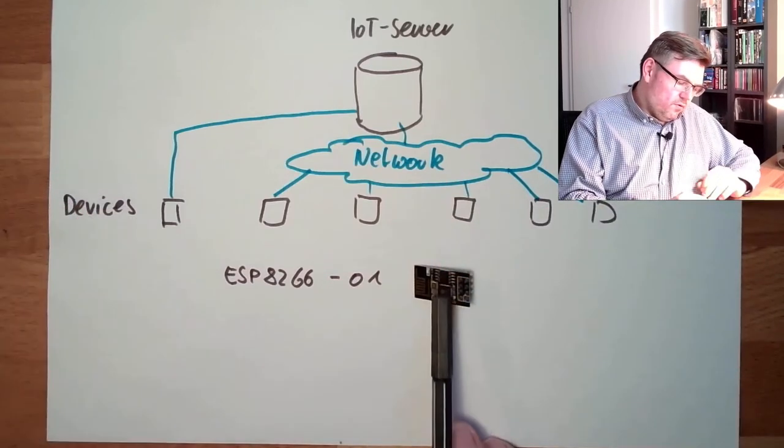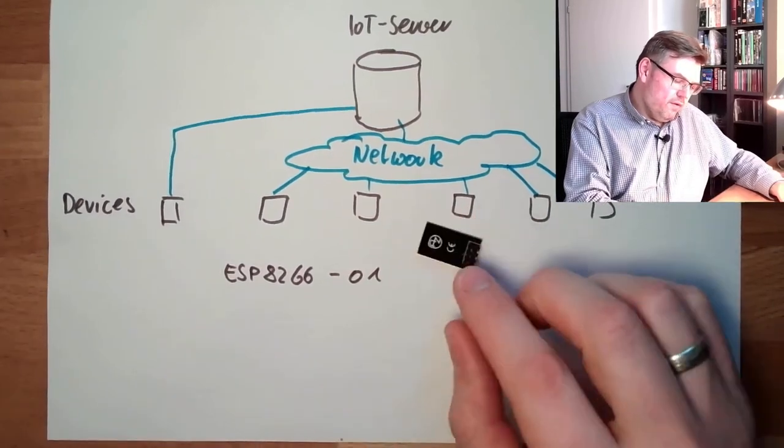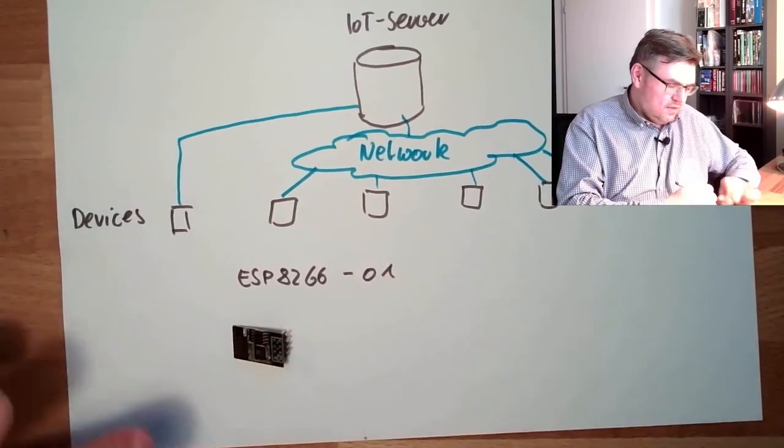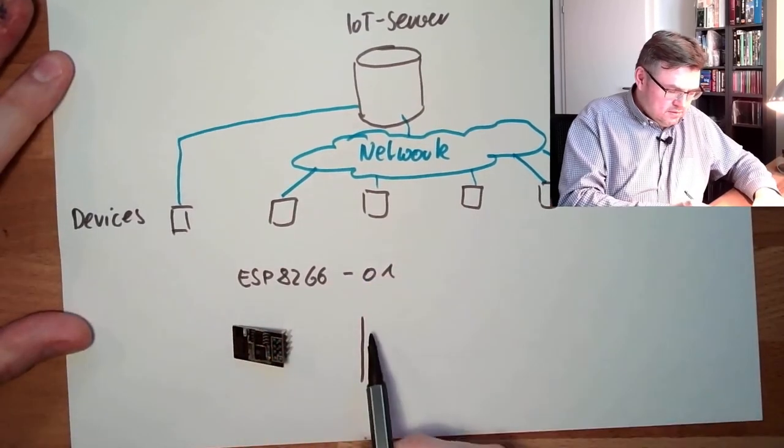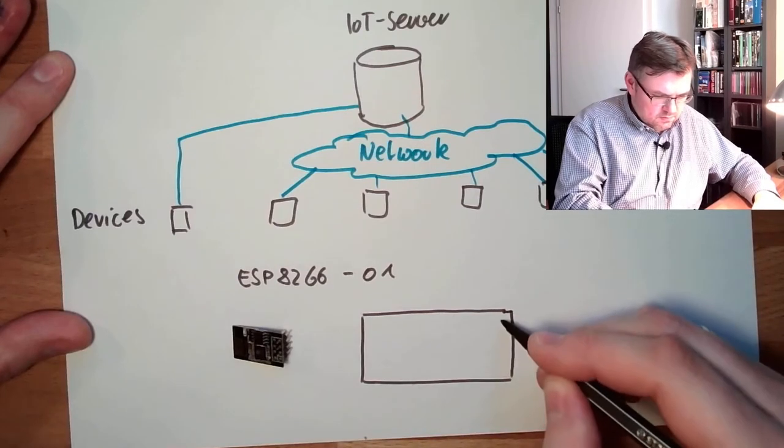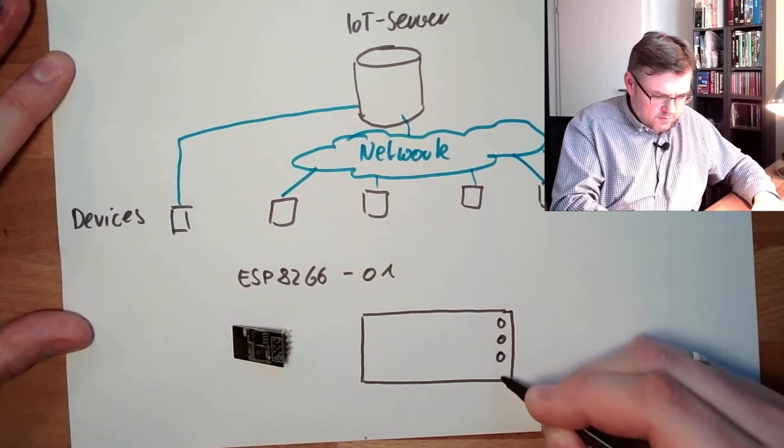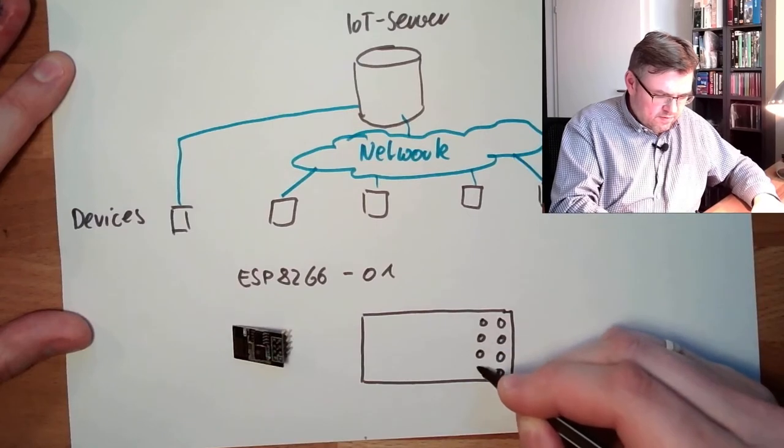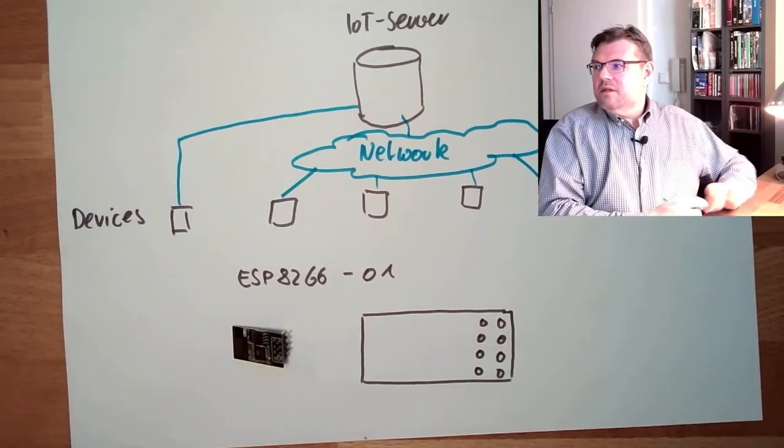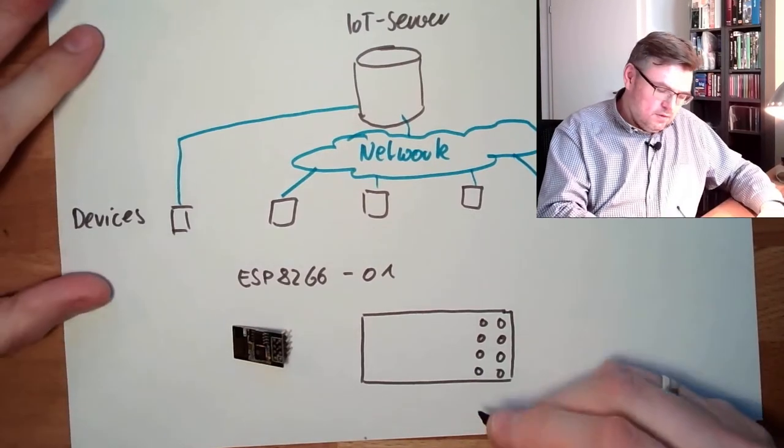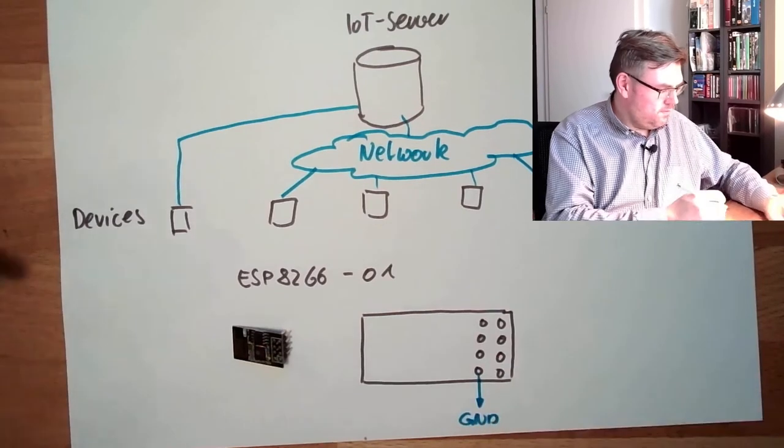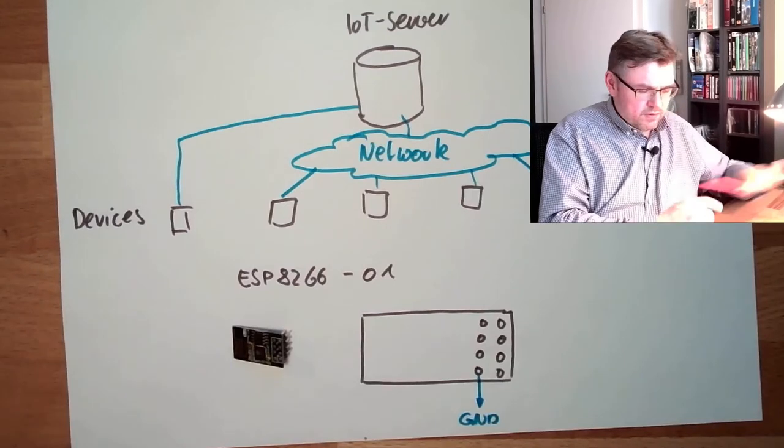This is the controller, this small part. We have eight pins. If it's located like this, then those eight pins, one, two, three, four, five, six, seven, eight, that do have the following meaning. So this here is ground.